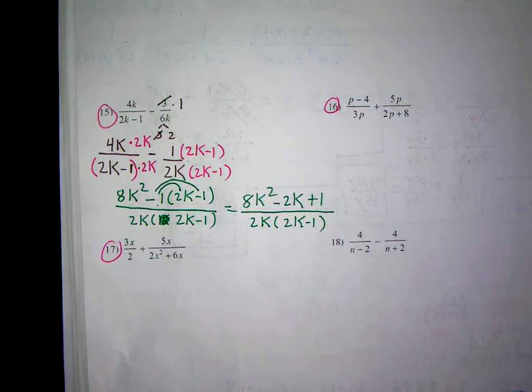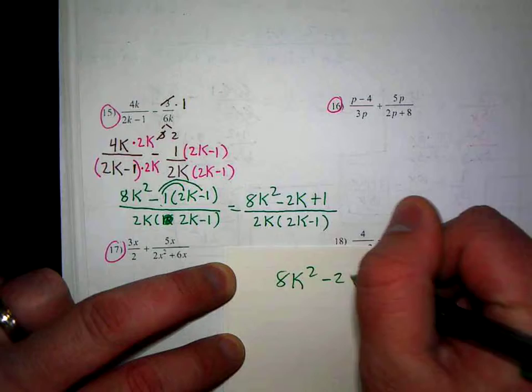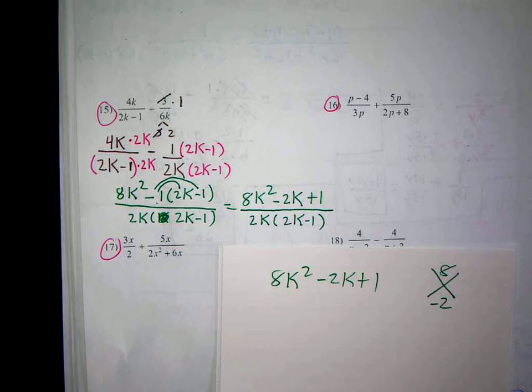Does this factor? I have a trinomial. A is not 1. Let's think about it. 8k² minus 2k plus 1. Does that factor? So I take 8 times 1. Negative 2. Are there two numbers that when you multiply them you get 8? When you add them you get negative 2?